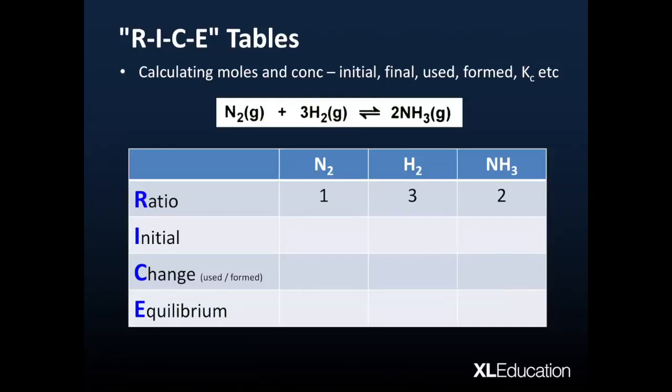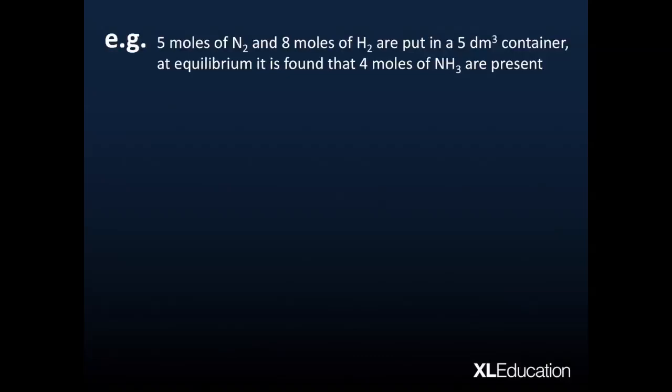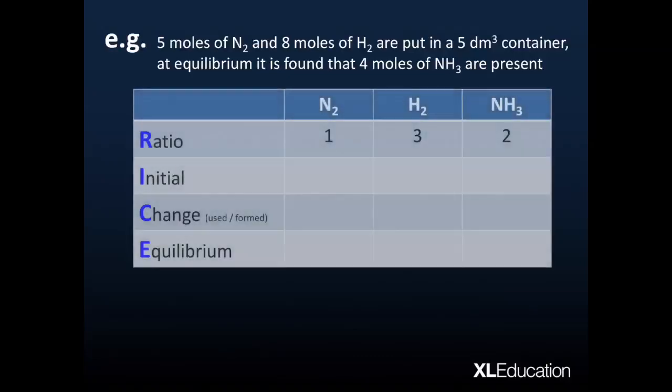The next thing is then I. I is the initial amount of moles. Now, let's apply this to a particular example. So here we go. Five moles of nitrogen and eight moles of hydrogen are put in a five decimetre cubed container. At equilibrium, it's found that four moles of ammonia are present.